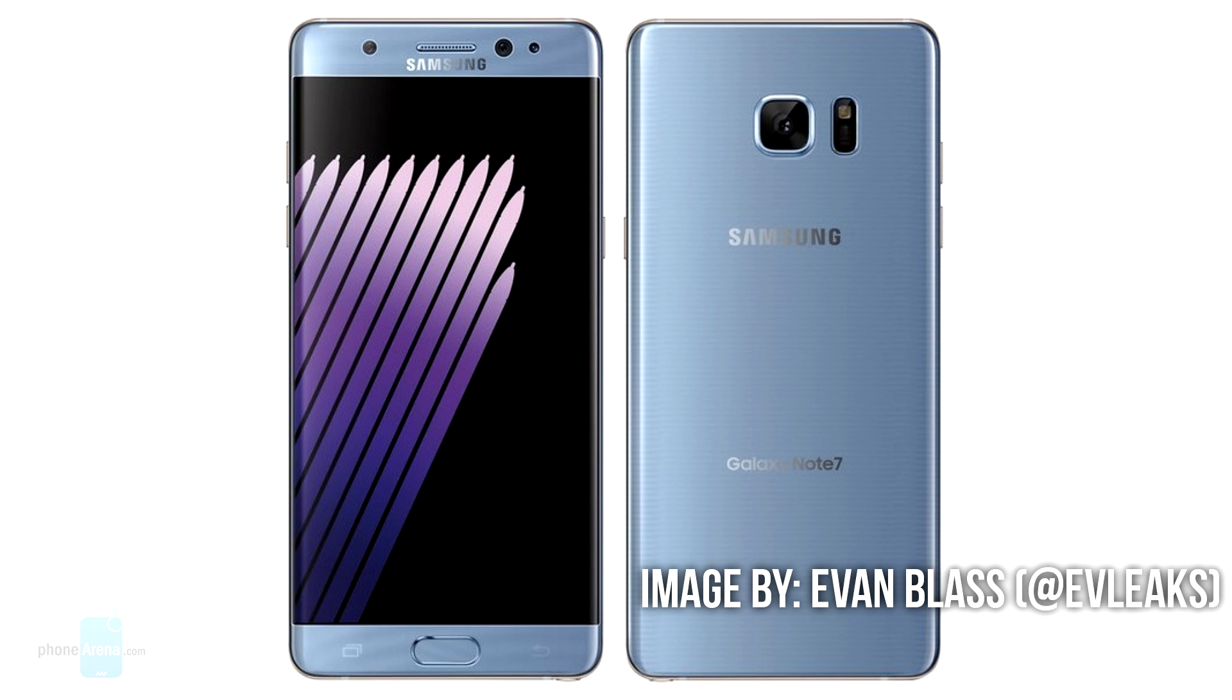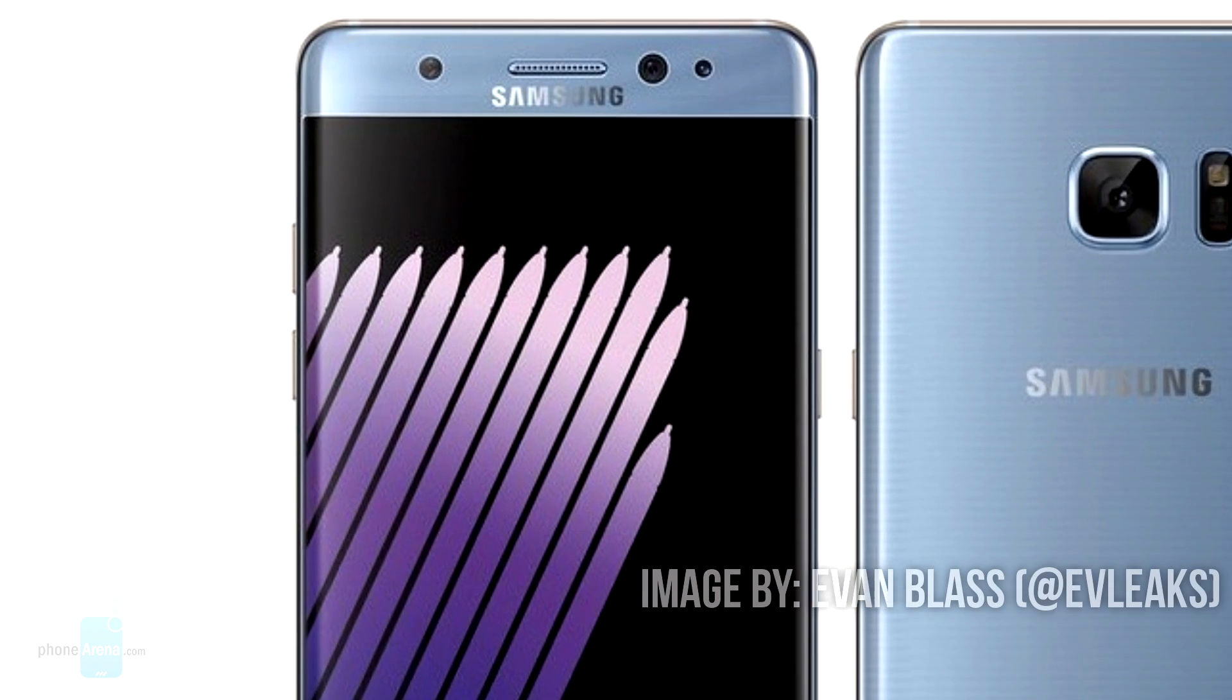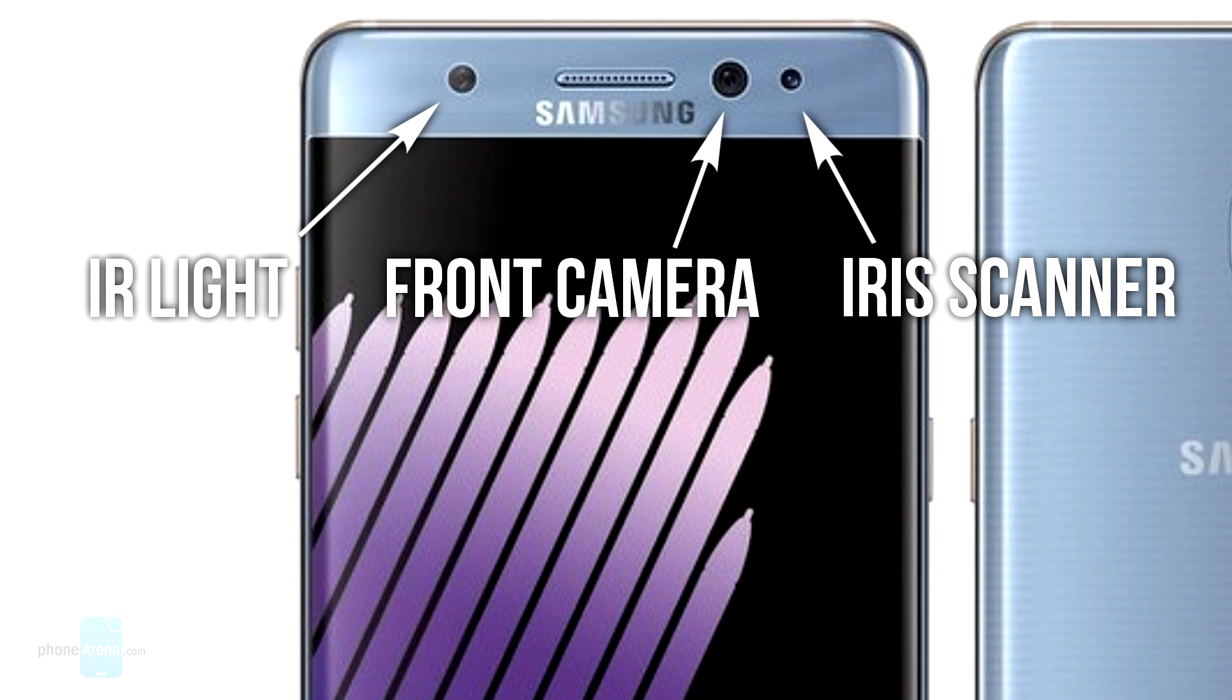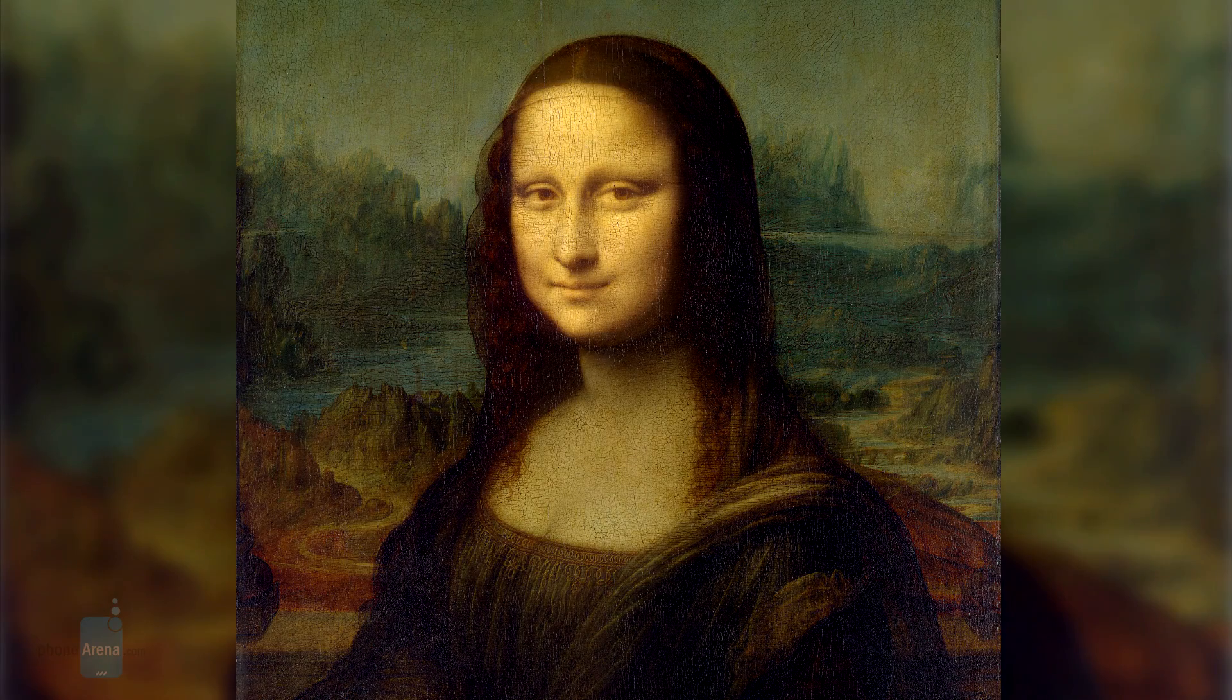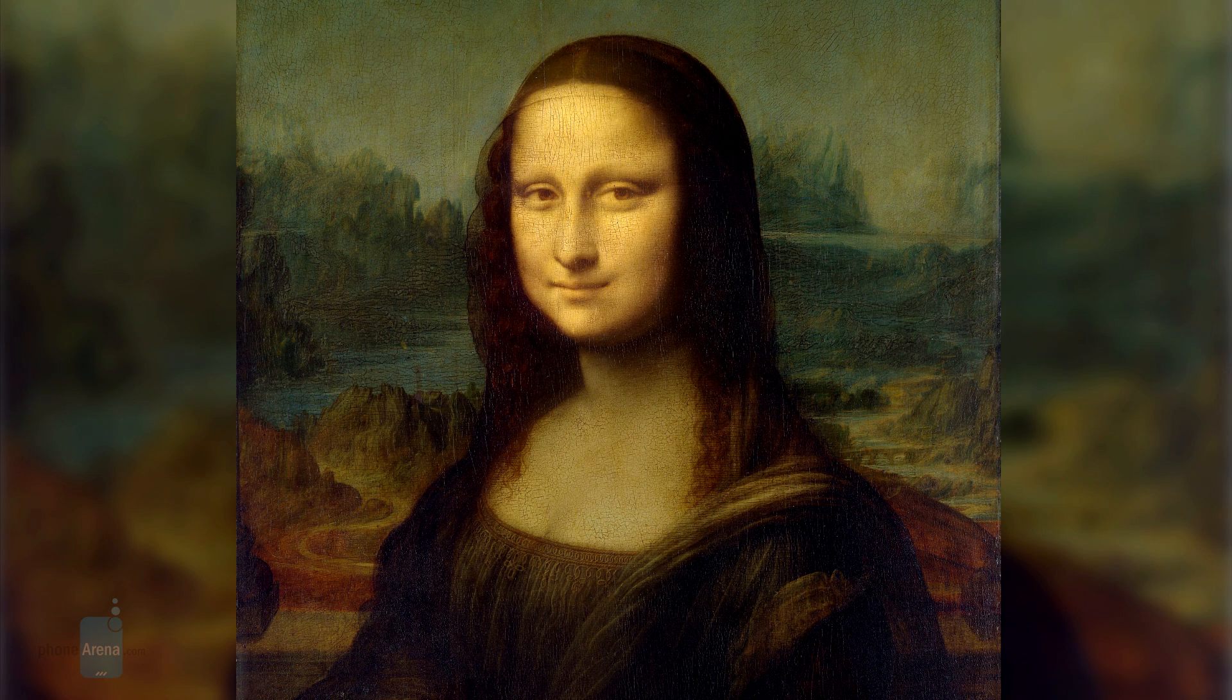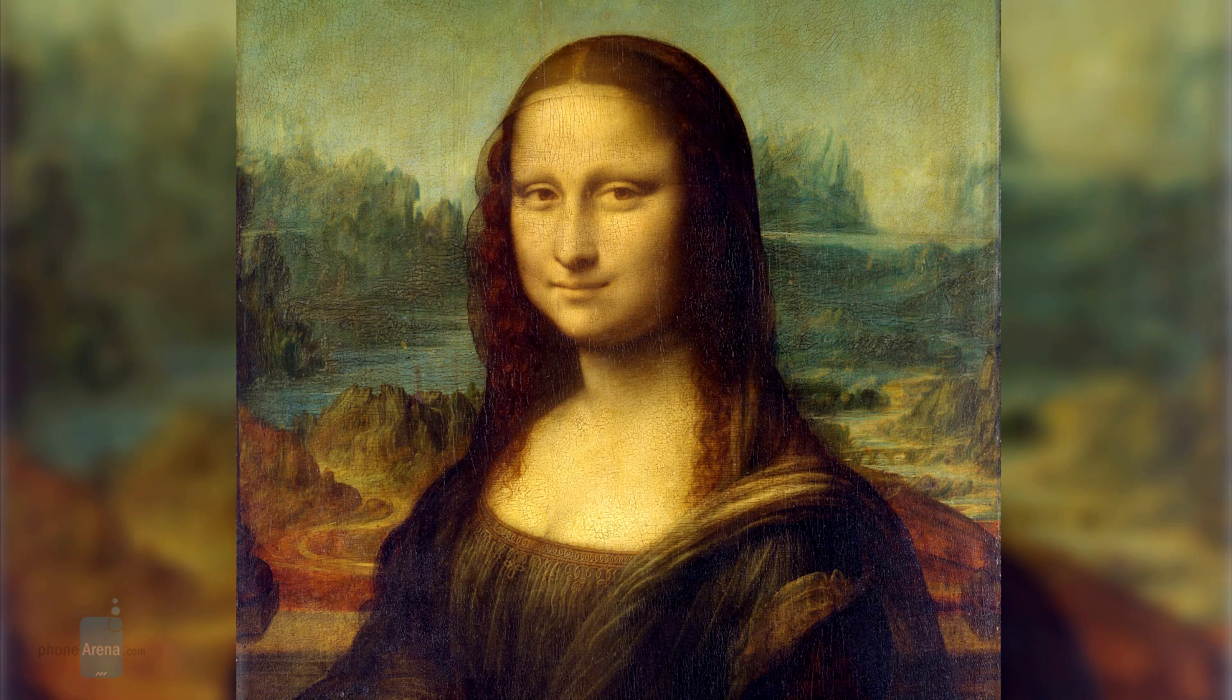For the most part, this is how the iris scanner on the Galaxy Note 7 is expected to work. However, the front-facing camera may also be involved in the process. It could be used to detect the user's face and eyes. Once it knows where to look, the iris scanner will make a reading.